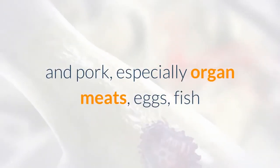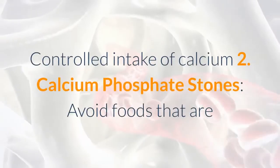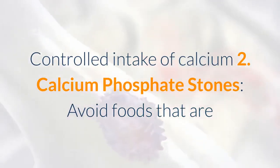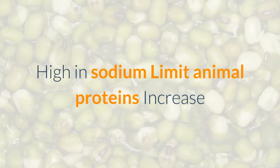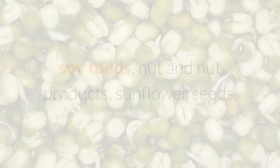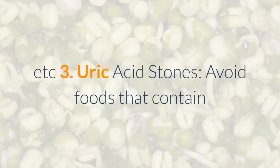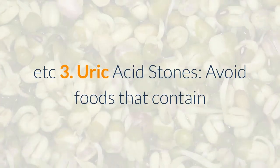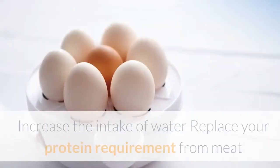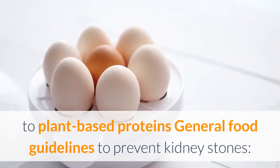For calcium oxalate stones, avoid beef, chicken, pork, especially organ meats, eggs, fish, shellfish, and controlled intake of dairy products. 2. Calcium phosphate stones: avoid high-sodium foods, limit animal proteins, and increase intake of legumes, beans, lentils, peanuts, soy foods, nuts, and sunflower seeds. 3. Uric acid stones: avoid foods high in animal protein. 4. Cysteine stones: increase water intake and replace animal protein with plant-based proteins.